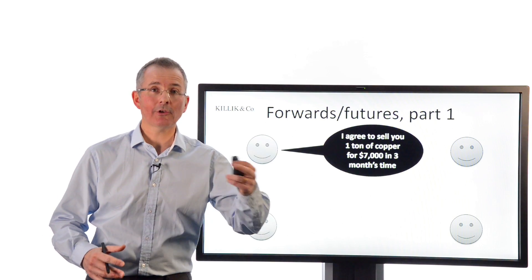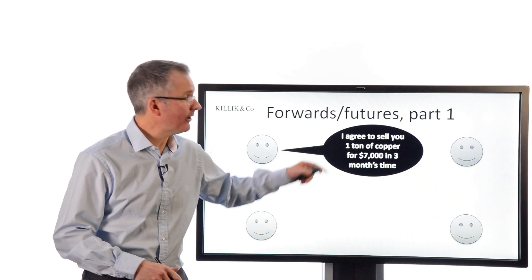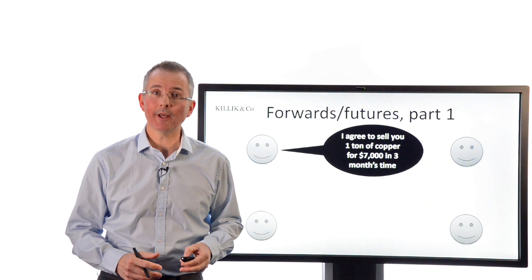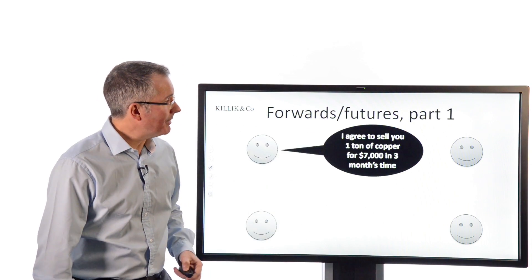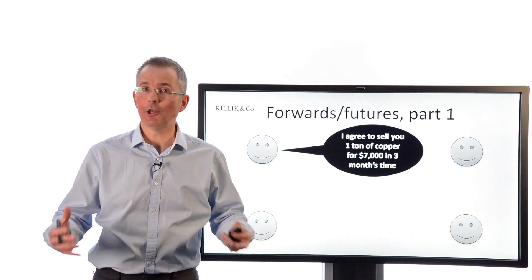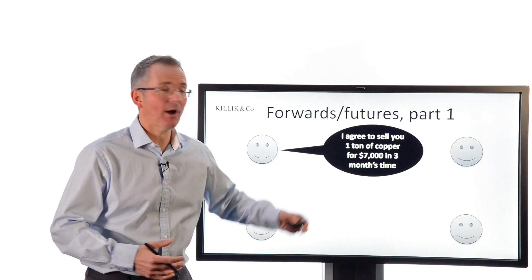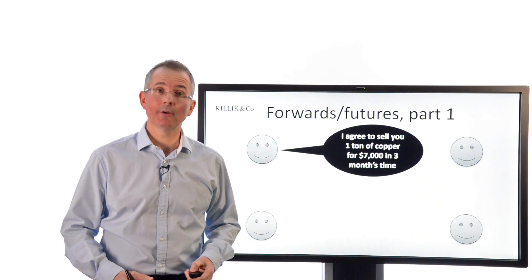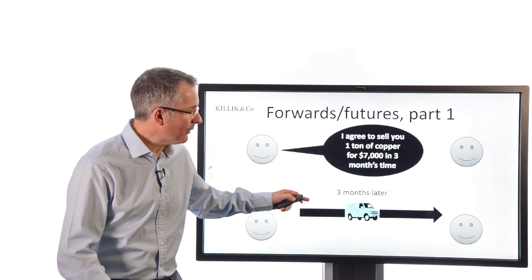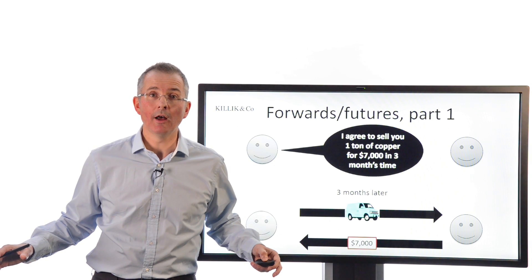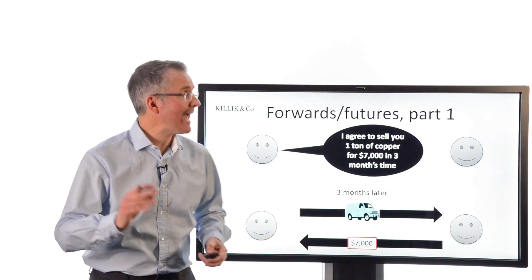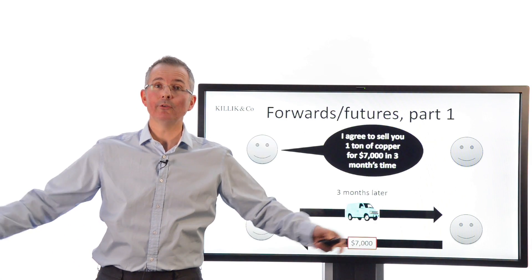If the price rises, I'll be sad because I could have sold the copper for more. If it falls, I'll be happy because I'm guaranteed $7,000. That's the nature of hedging. You take out risk, but the price you pay is you may not squeeze out as much profit as you would have done without the contract. The guy on the right maybe needs copper, uses it in a manufacturing process and is quite happy to lock in a price. Three months goes by and a tonne of copper is delivered in a mysteriously old-looking van and $7,000 goes the other way. Contract's over. Very simple. That is a hedge for both parties.